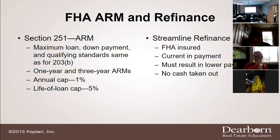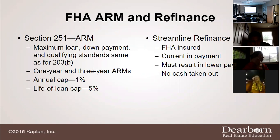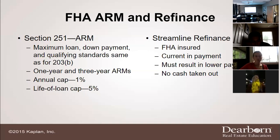The FHA also offers a streamline refinance — this keeps borrowers current on their payments and most results in a lower payment over time with no cash taken out. FHA contributions to real estate finance include setting the basic standards for qualifying borrowers, such as the 3.5% down requirement. Banks use these FHA standards as the baseline, and conventional loans have even more requirements on top of that.